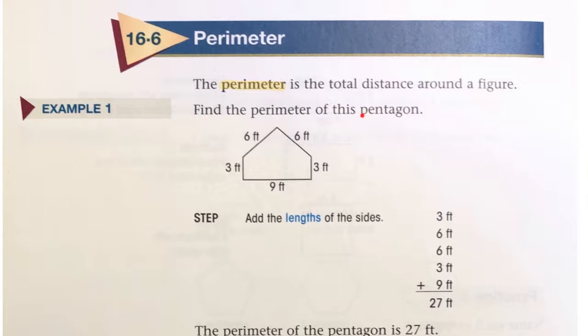Example 1: Find the perimeter of this pentagon. Add the lengths of the sides, and you get 27 feet.